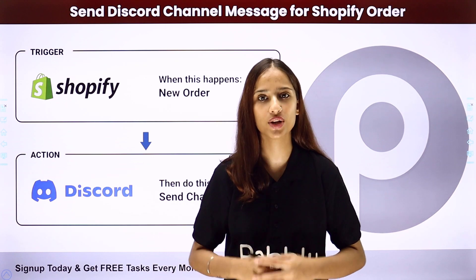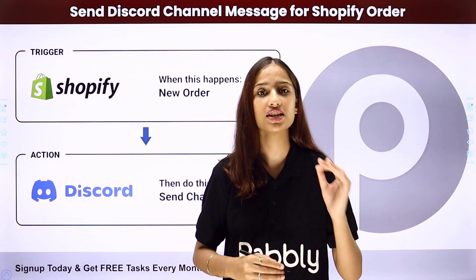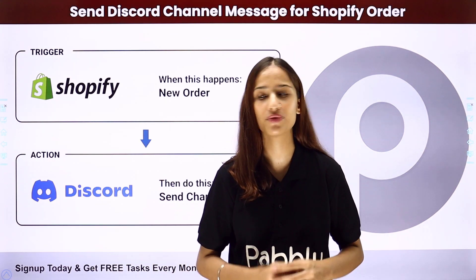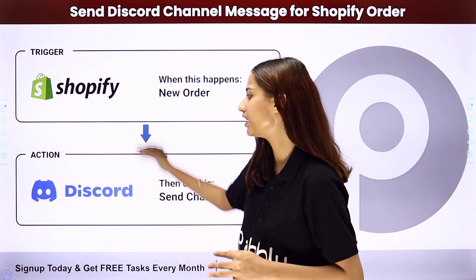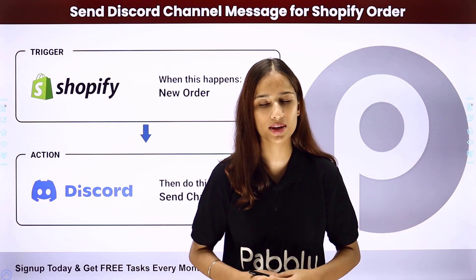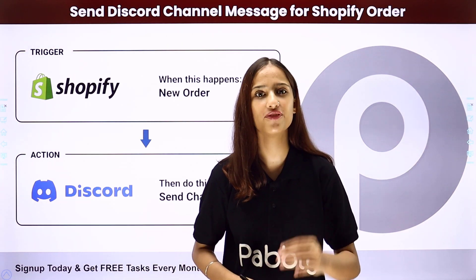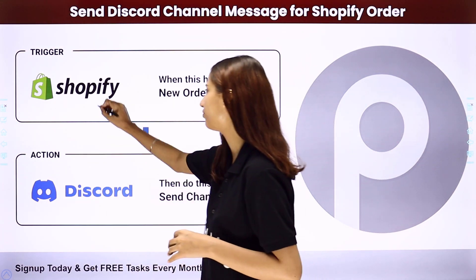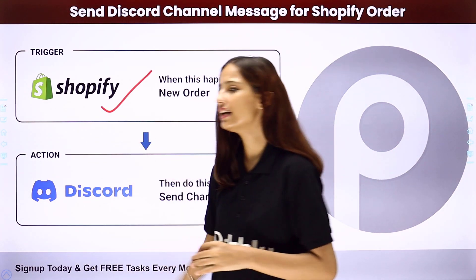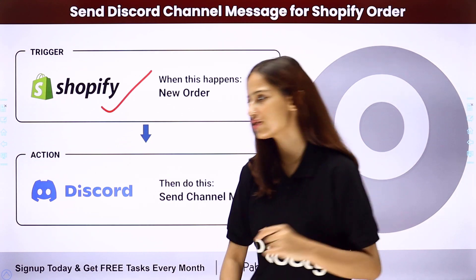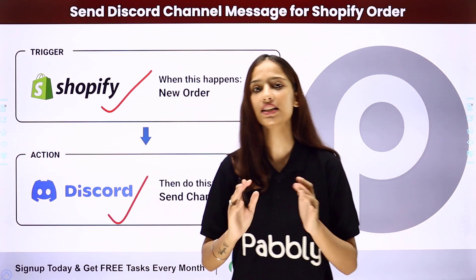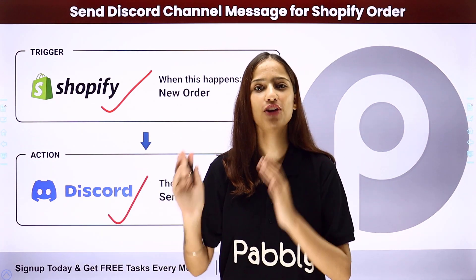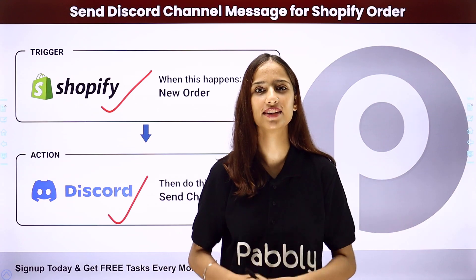So how will we be doing this? For this we need to set up an integration between these two applications. For that we will be using PabblyConnect, where our trigger application will be Shopify and our action application will be Discord. To learn how we set up this integration, follow me through the screen.